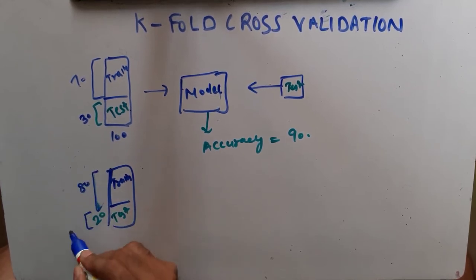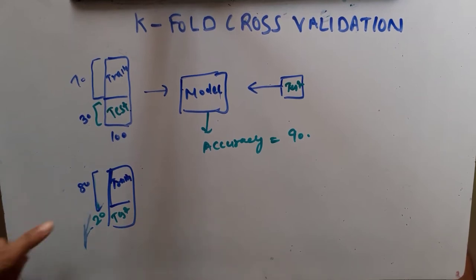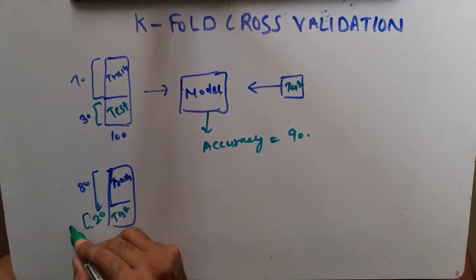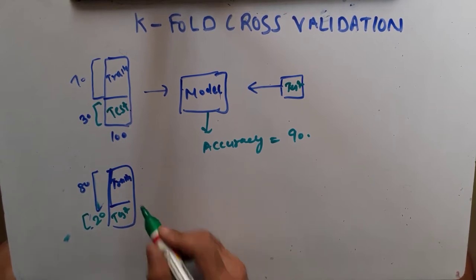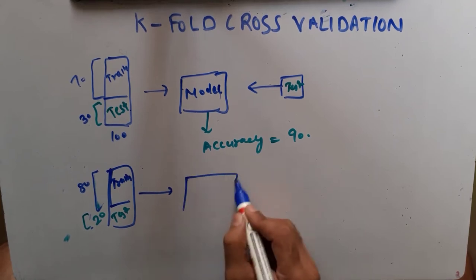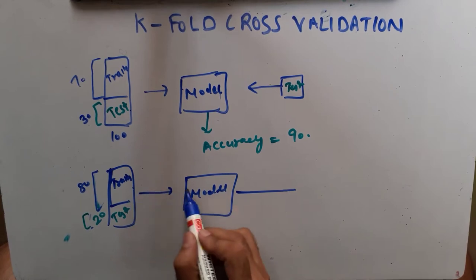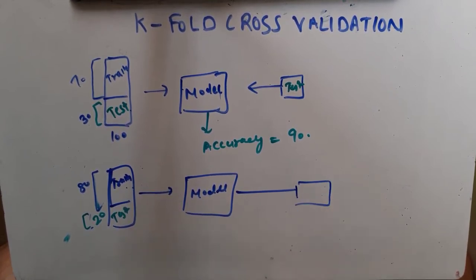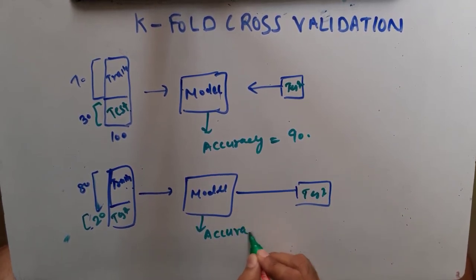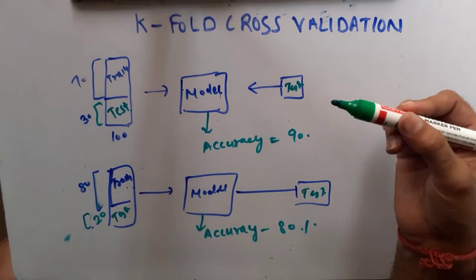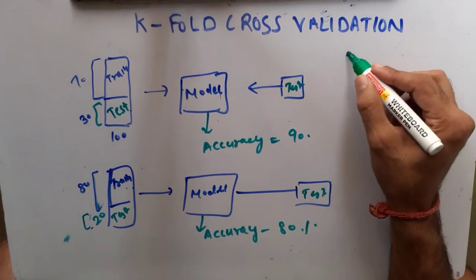So this is 80% train and 20% test. I give the same data to my model, train over this training data, then give my test data to it, and assume that I get an accuracy of 80%. In this scenario, we are assuming the model is the same.